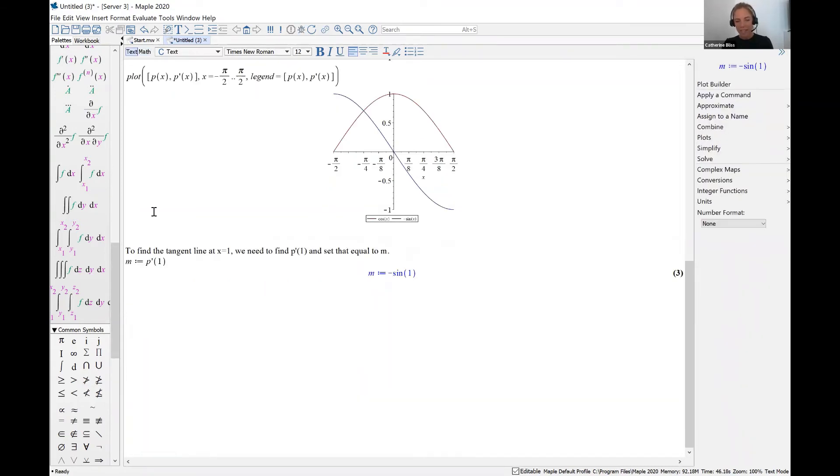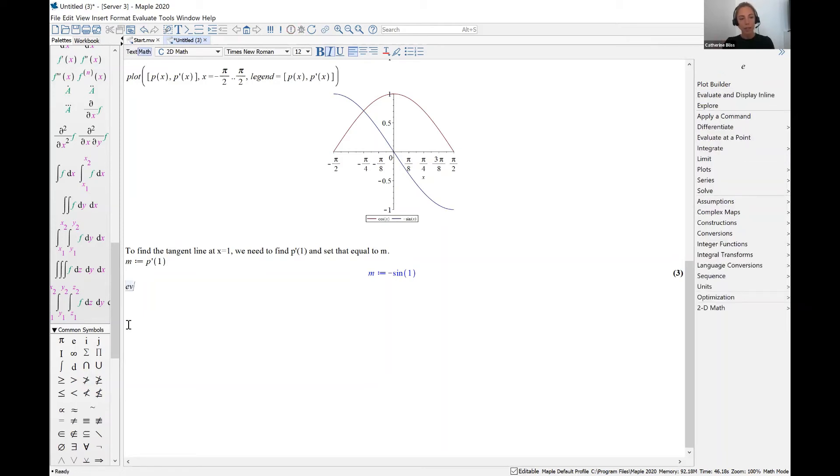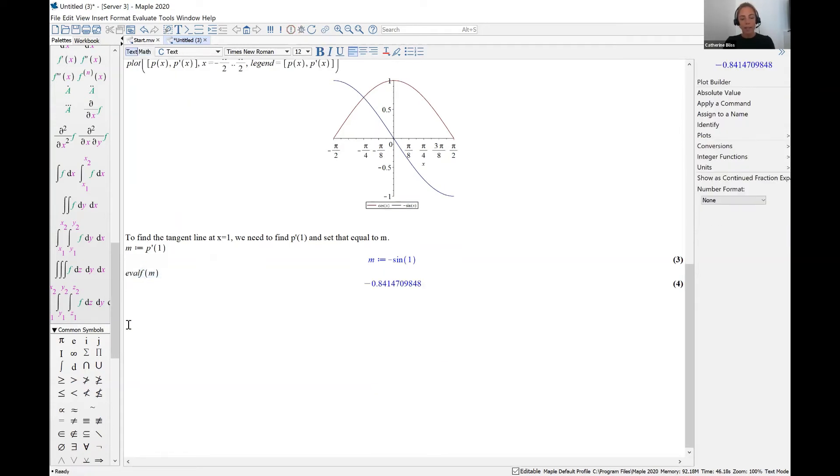Okay, and Maple tells me that's negative sine of one, which looks a little bit strange. It is correct. It is an exact value. If you wanted to peek at a decimal approximation, you can type eval f, all lowercase. And we get an idea, it's about negative point eight.